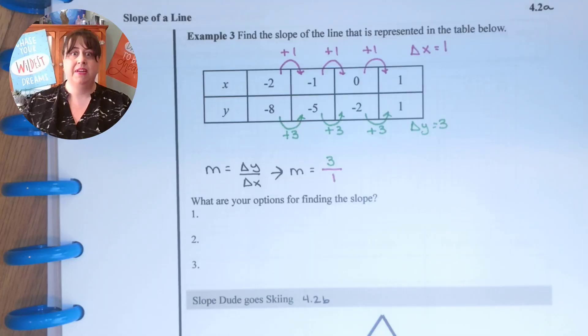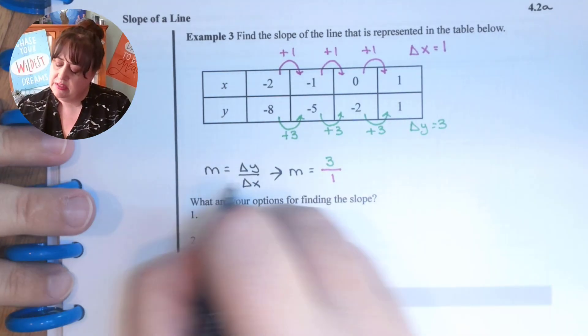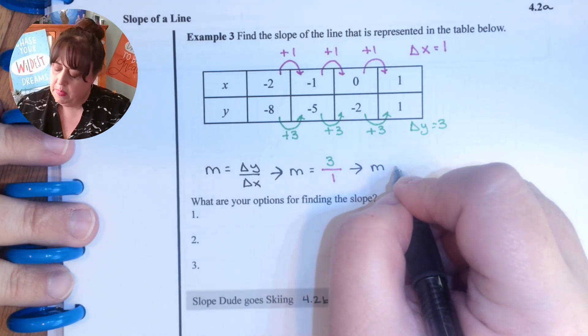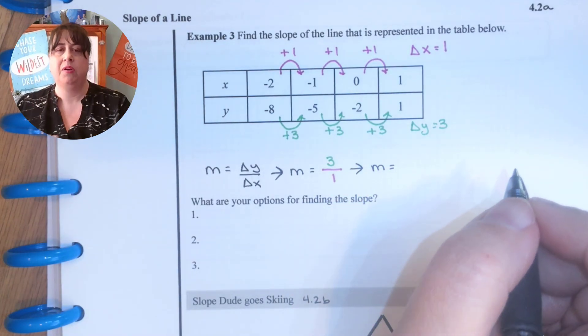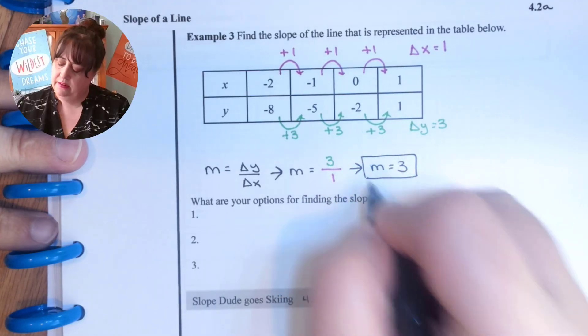So we were able to get our slope just by looking at our changes. So we want to simplify that. Notice I'm not connecting with equal signs. I'm connecting with an arrow. That's because equal signs just in a row, that's a run-on sentence in math. So our slope is three.